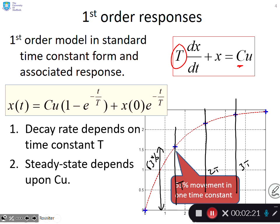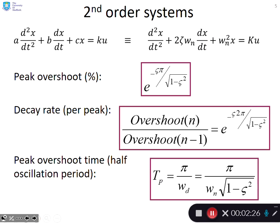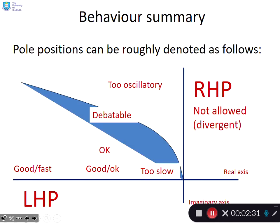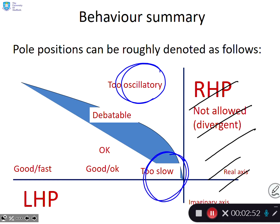What about a summary of behavior? Students should be familiar with diagrams like this where any poles in the right half plane are not allowed because that's divergent behavior. If we're in the left half plane, you don't want poles that are too oscillatory or too slow. You're aiming for this type of region.